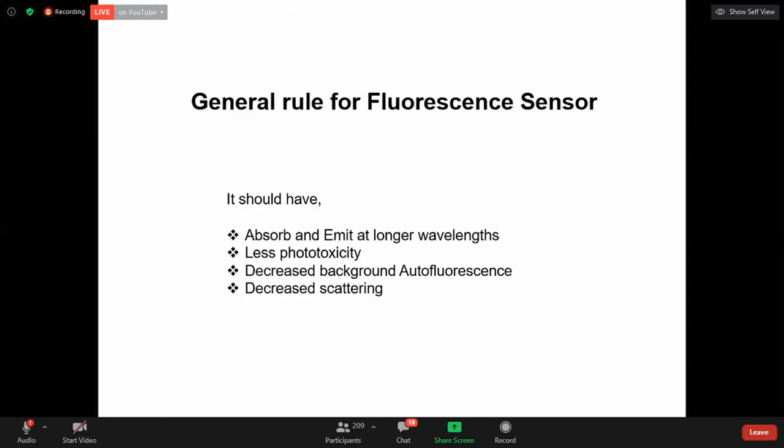So before designing fluorescent sensor, we should incorporate general rules to design fluorescent sensor. It should absorb and emit at longer wavelengths. Less phototoxicity. This phototoxicity concept already explained by Dr. Sebastian. And decrease the background autofluorescence, decrease scattering. These are all the factors we should incorporate before designing fluorescent sensor.